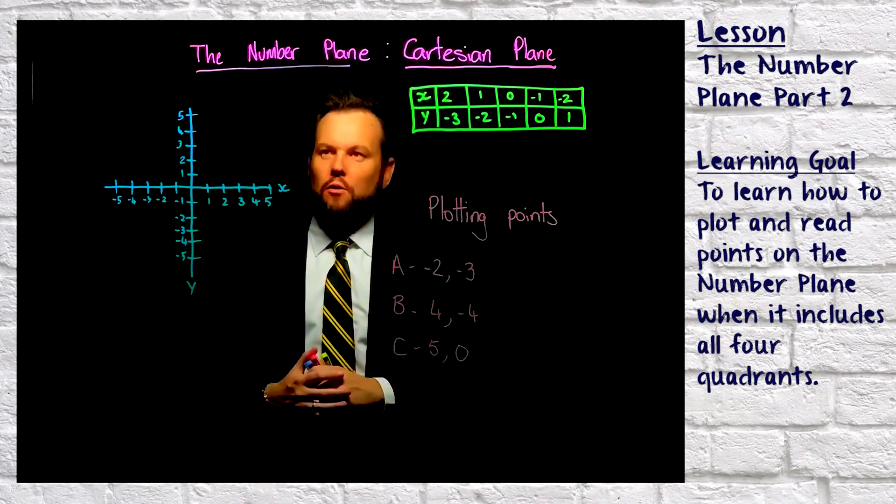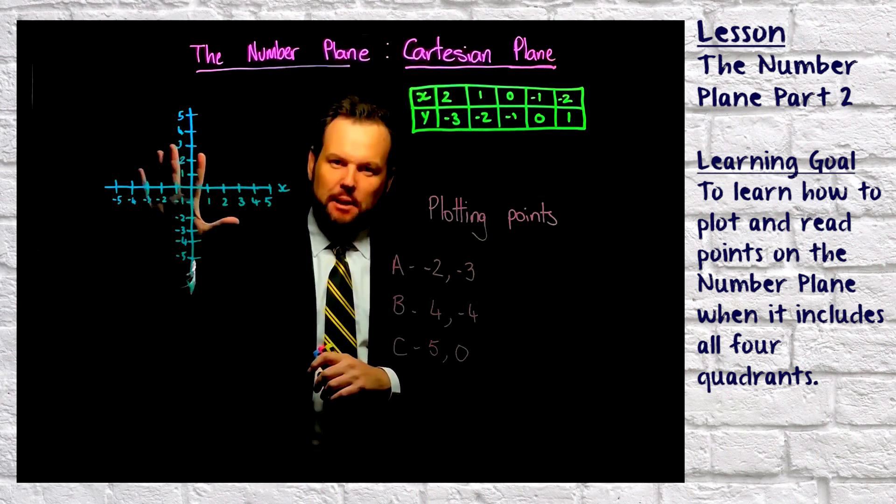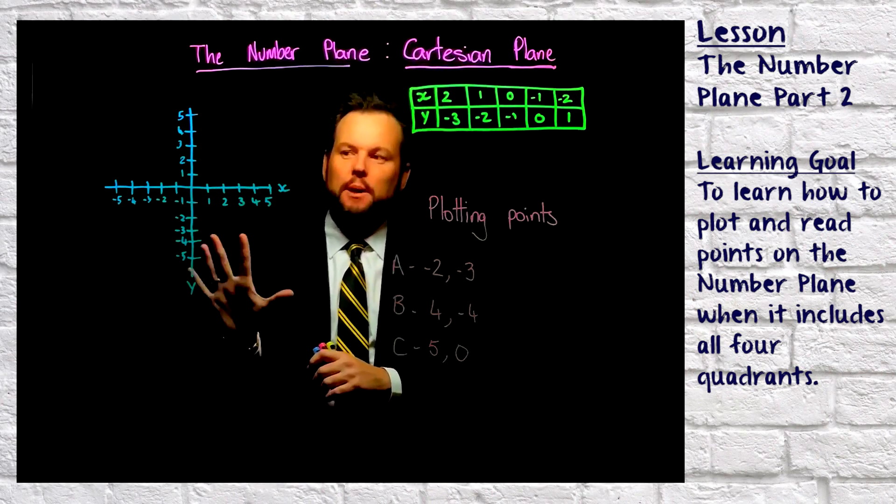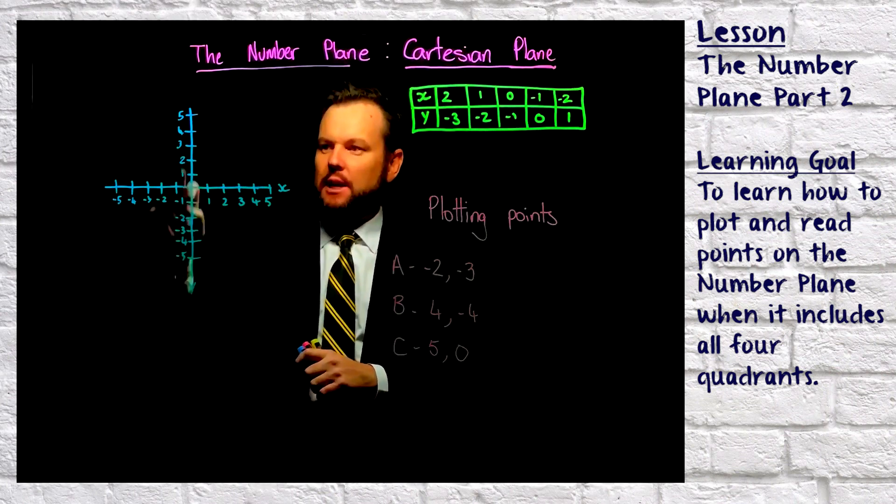Okay, so this is part two of the number plane, looking at the Cartesian plane. Obviously our Cartesian plane this time around is a lot bigger. So we have negatives as well on here.